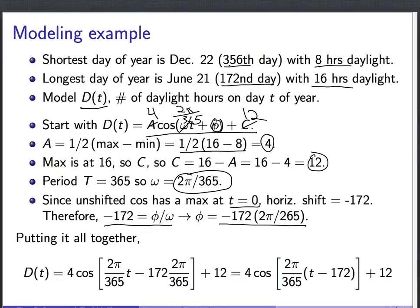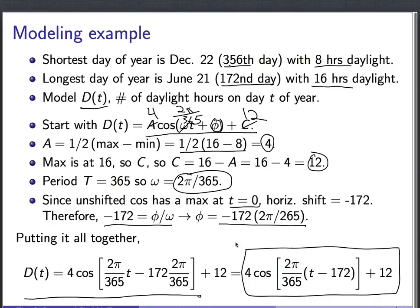We take those values of A, ω, φ, and C. We put them all into the function. We get this expression here. And if you want to simplify it a little bit, you can notice that these two terms inside the cosine both have a factor of 2π over 365. You can factor it out to get this final form here that models the number of daylight hours on day t of the year.